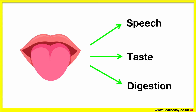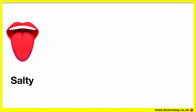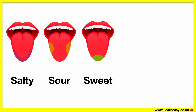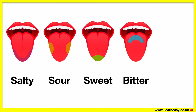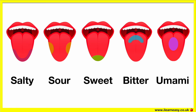The tongue has a rough surface consisting of small bumps called papillae. These help with gripping food when chewing and they contain taste buds. The taste buds help us to detect different types of flavours such as salty, sour, sweet, bitter and umami. The taste receptors on the tongue are able to taste food when it's moistened in the mouth by saliva.